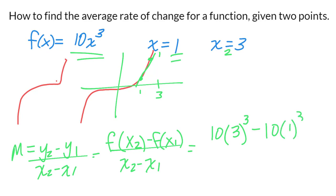So 3 times 3 is 9, 9 times 3 is 27, so 27 times 10 is 270. Then minus 10 over 2, so that'd be 260 divided by 2, which would give you your final answer of 130.